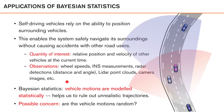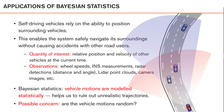Let's look at another example where it's common to use Bayesian statistics, which we'll use as an inspiration for many examples in this course: automotive examples. We look at self-driving vehicles which rely on the ability to position surrounding vehicles in order to safely navigate their surroundings and not cause accidents. We assume a self-driving vehicle equipped with a bunch of sensors that observes the traffic situation in front. The quantity of interest is the relative position and velocity of the other vehicles at the current time. To do this, we make use of noisy observations from sensors — wheel speed sensors, inertial sensors such as accelerometers and gyros to measure how we are moving, as well as radar detections giving distance and angle to objects, LiDAR point clouds, or camera images.